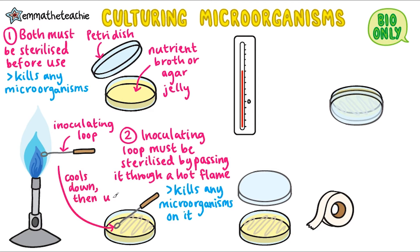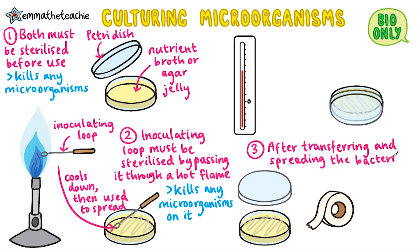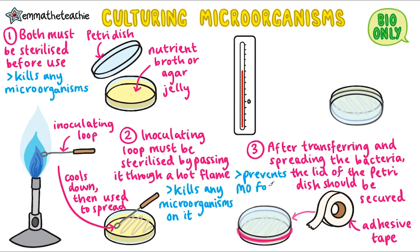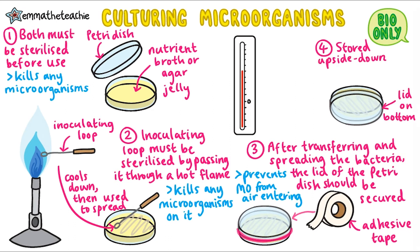The inoculating loop is then allowed to cool down and then used to spread your bacteria. After transferring and spreading the bacteria, the lid of the petri dish should be secured lightly with adhesive tape. This is important as it prevents any microorganisms that are in the air from entering your petri dish and culture. The petri dish is then stored upside down — this stops any drops of condensation forming on the lid and dropping down onto the agar surface, which could damage or prevent growth of the bacterial cultures.